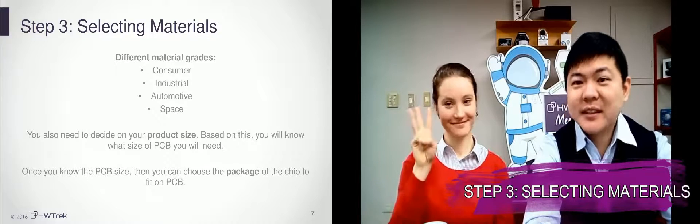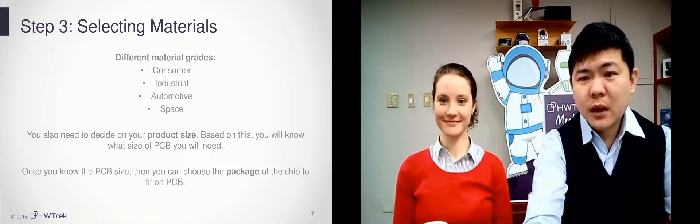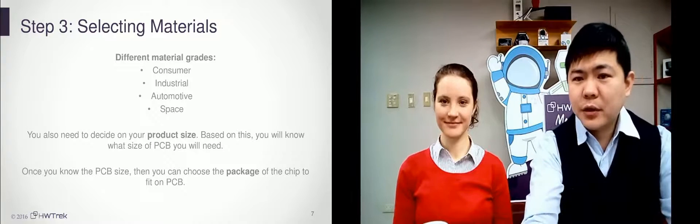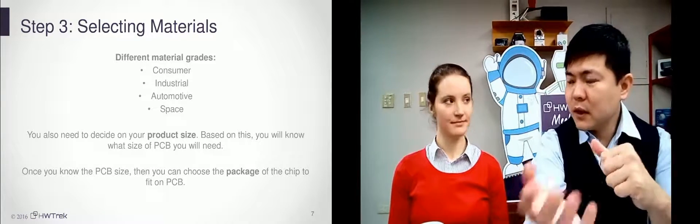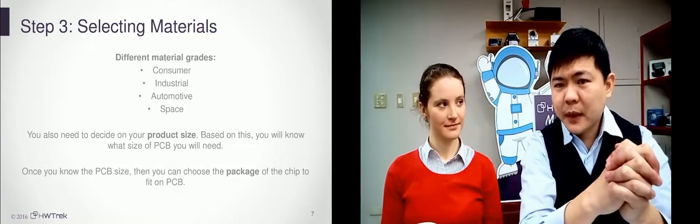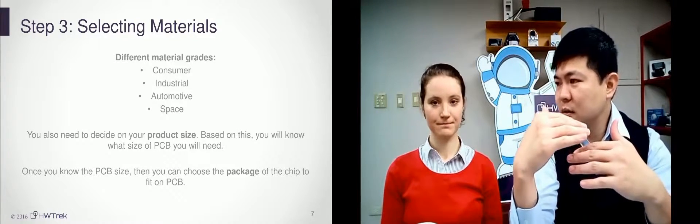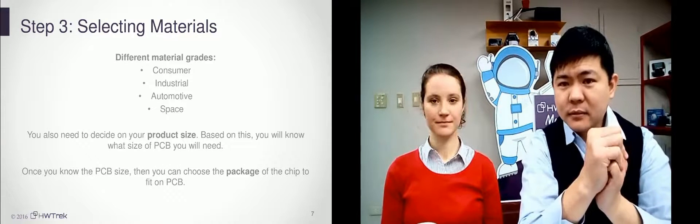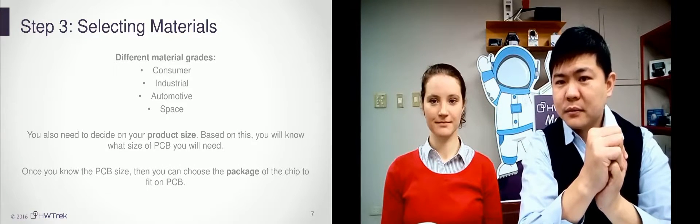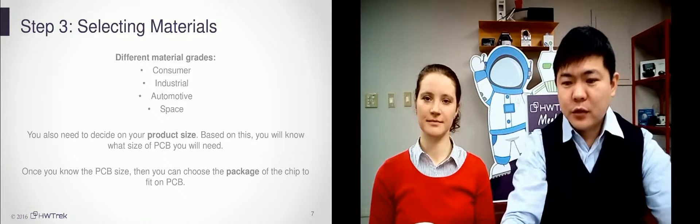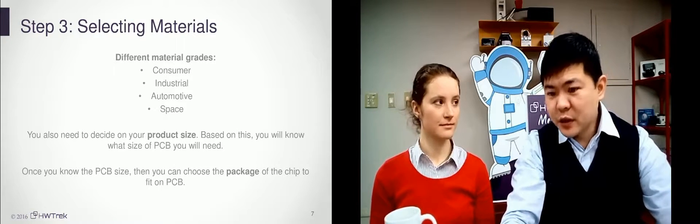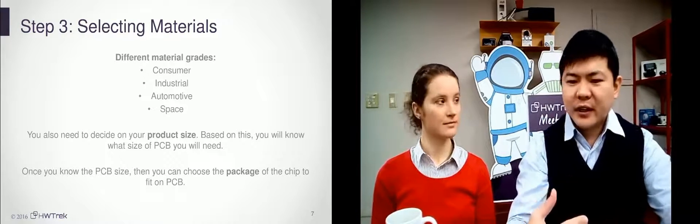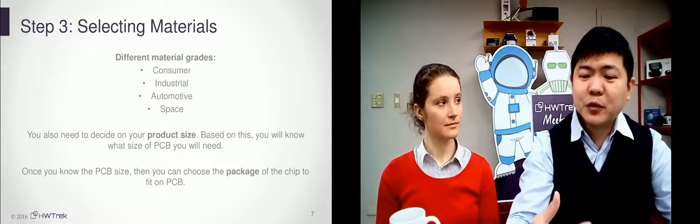Step number three: selecting materials. We are halfway done — we just selected our solution, now we need to select the material. For each component, we will have different grades: consumer grade, industrial grade, automotive grade, space industrial grade. The higher the grade, the higher the cost will be, so please pay attention to that when selecting materials. The main difference between each grade is the temperature range. For example, a consumer grade chip can mainly only operate in a temperature range of 0 to 90 degrees, whereas industrial grade can handle from negative 40 degrees up to 90 degrees. The grade selection will depend on who will be using your product.